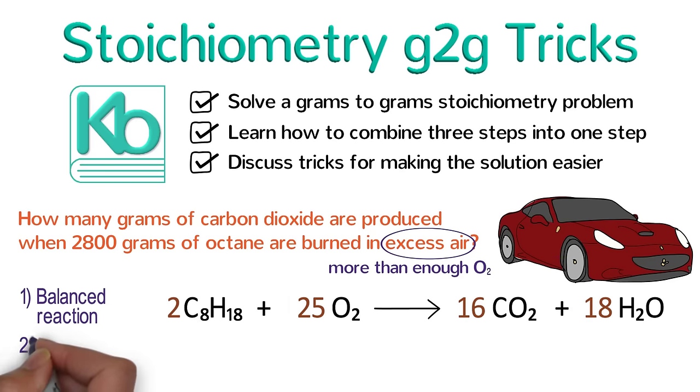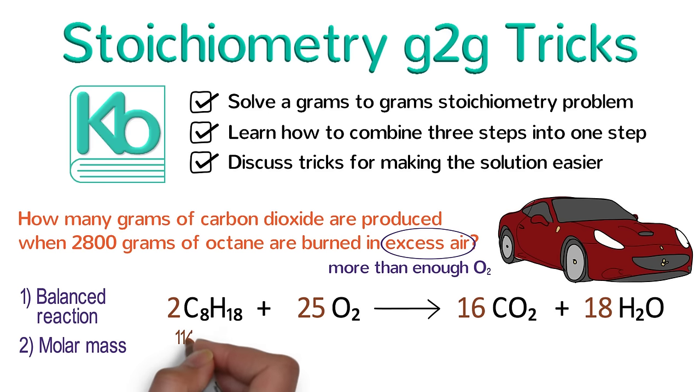Next, write down the molar mass of each chemical in the problem. The problem asks us to convert between octane and carbon dioxide, so we need the molar mass of both of them. 8 carbons and 18 hydrogens works out to be 114.2 grams per mole. Remember that the molar mass has nothing to do with the coefficients in the balanced reaction. Carbon dioxide has a molar mass of 44.01 grams per mole.